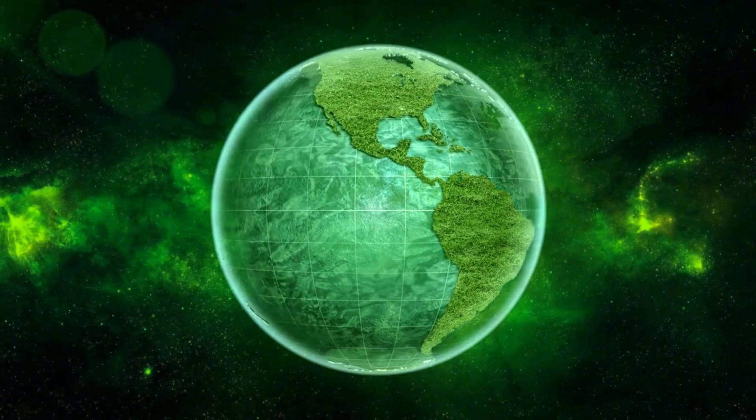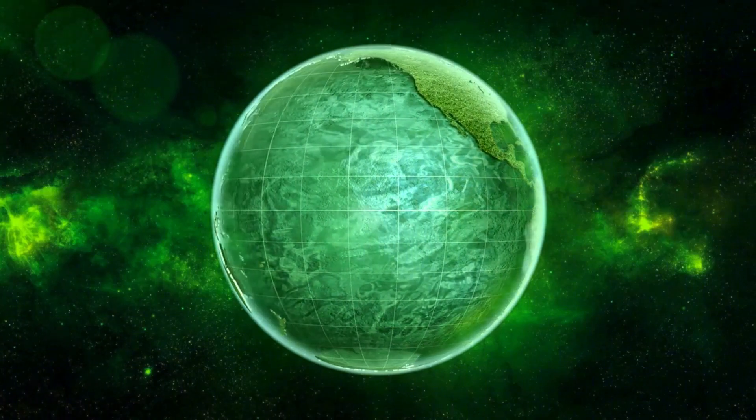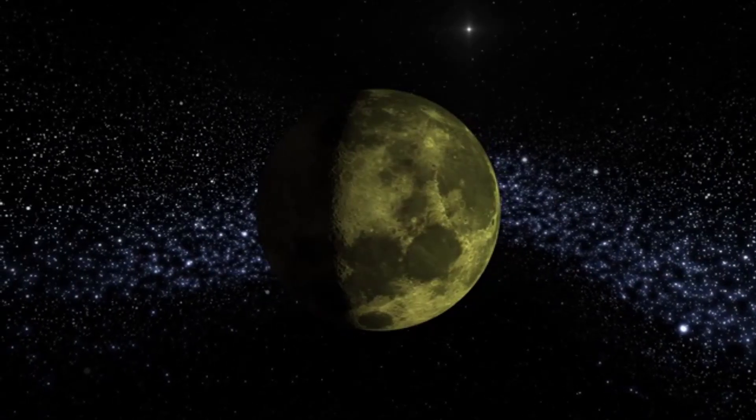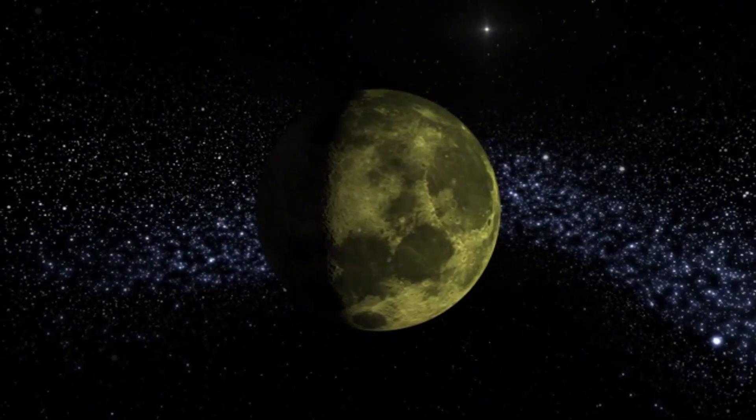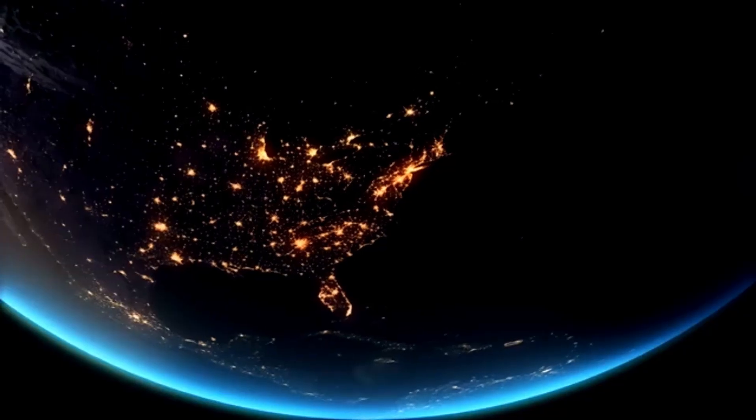This star is extraordinary for being the closest star system to our own after the Sun. This red dwarf star is located 4.23 light-years from our Sun, making it an intriguing target for astronomical examinations.